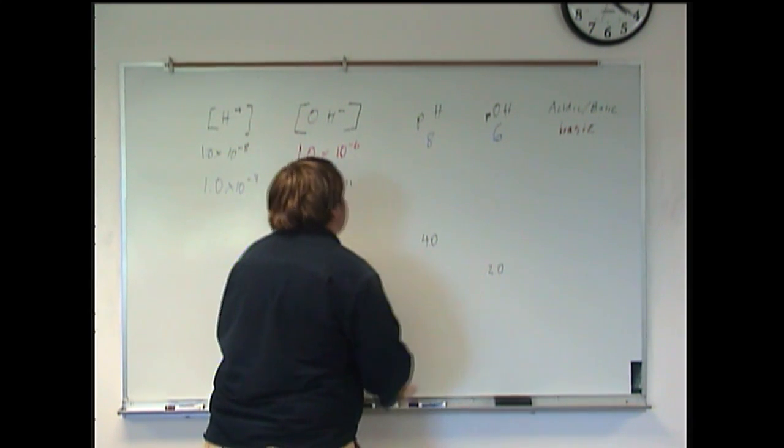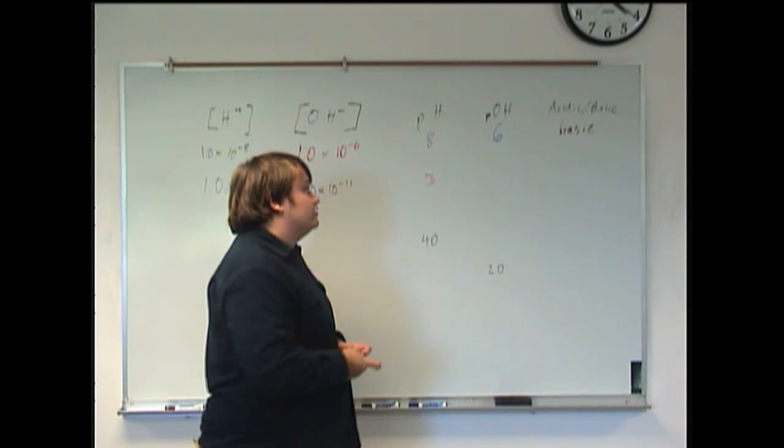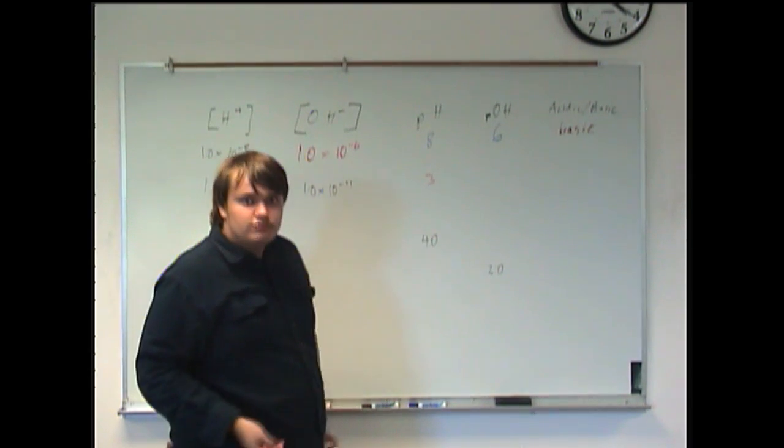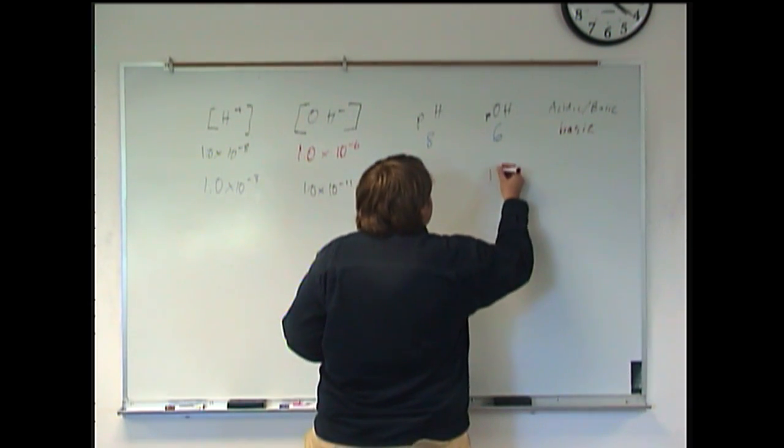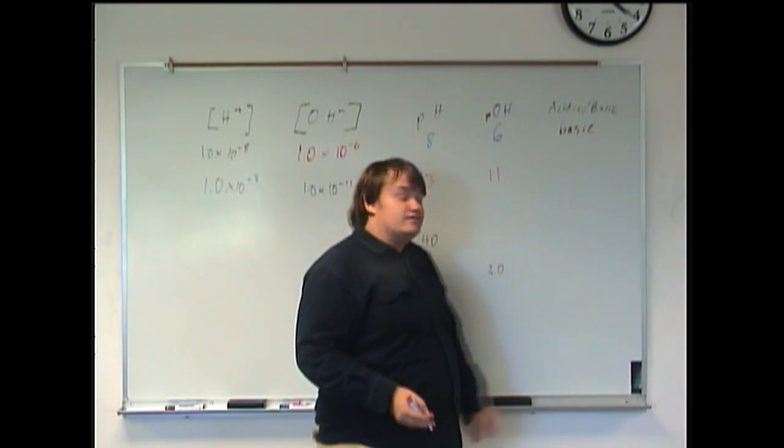So, in this case, we have a pH of 3 and a pOH based on pOH equals negative log of OH concentration. We have a pOH of 11.